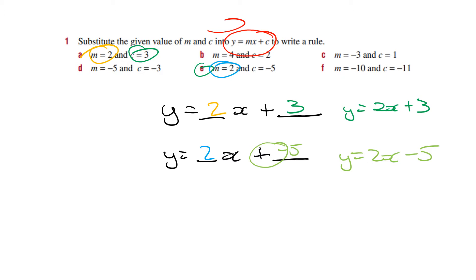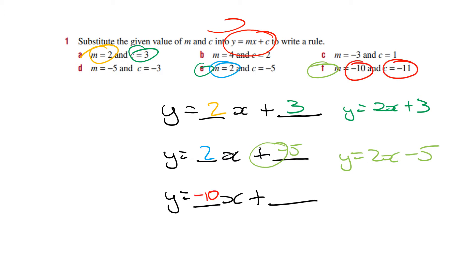Let's do one more — part f. So y equals, space, plus, space. My m is negative 10, so I'd put negative 10 there. My c is negative 11, so I'd put negative 11 there. Remember, plus and negative becomes negative. So I'm going to have y equals negative 10x minus 11.